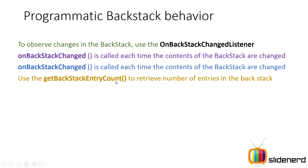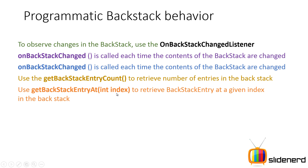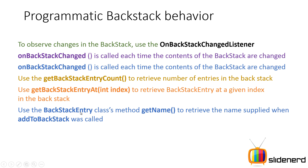Use getBackStackEntryCount() to retrieve the number of entries in the backstack, and getBackStackEntryAt(int index) to retrieve the entry at a given index. If there are 5 entries, the 4th entry is the topmost and the 0th entry is the earliest screen the user was on. You can use the BackStackEntry class's getName() method to retrieve the name of the entry present at each index.